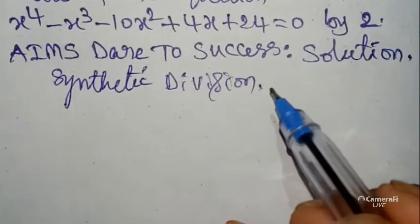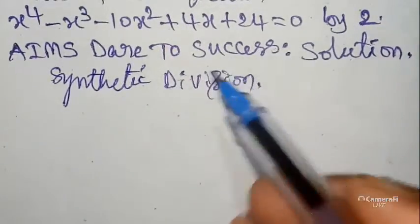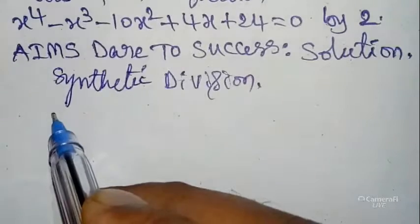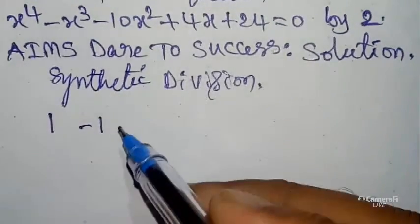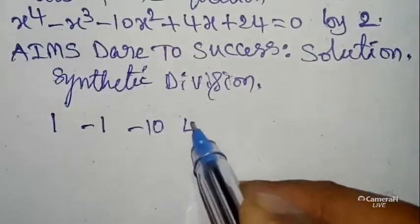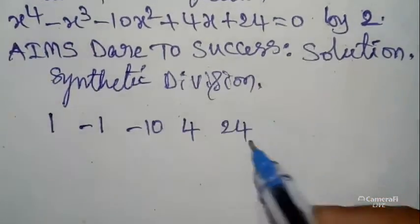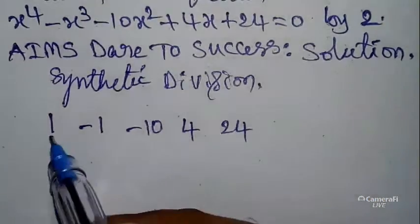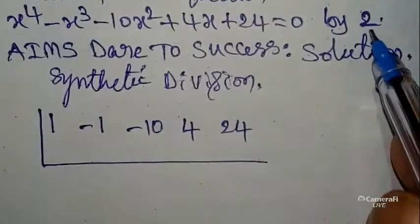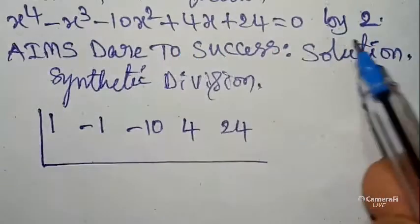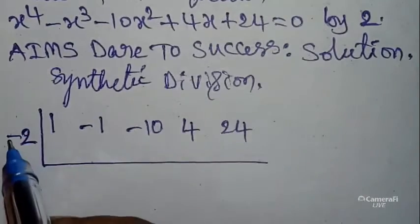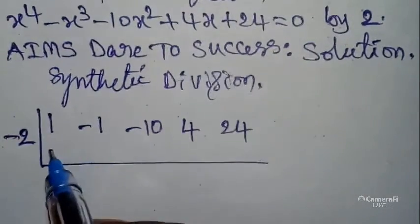Synthetic division is the easiest method. So you can write coefficients first: x^4 coefficient 1, x^3 coefficient -1, x^2 coefficient -10, x coefficient is 4, constant is 24. And write like this box. You can check it here translates equation by 2, take opposite symbol, it is -2.